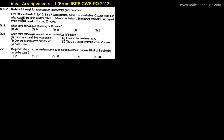Let's read the question first. Each of the six friends A, B, C, D, E, and F scored different marks in an examination. C scored more than only A and E. D scored less than only B. E did not score the last. The one who scored the third highest marks scored 81 marks. E scored 62 marks.